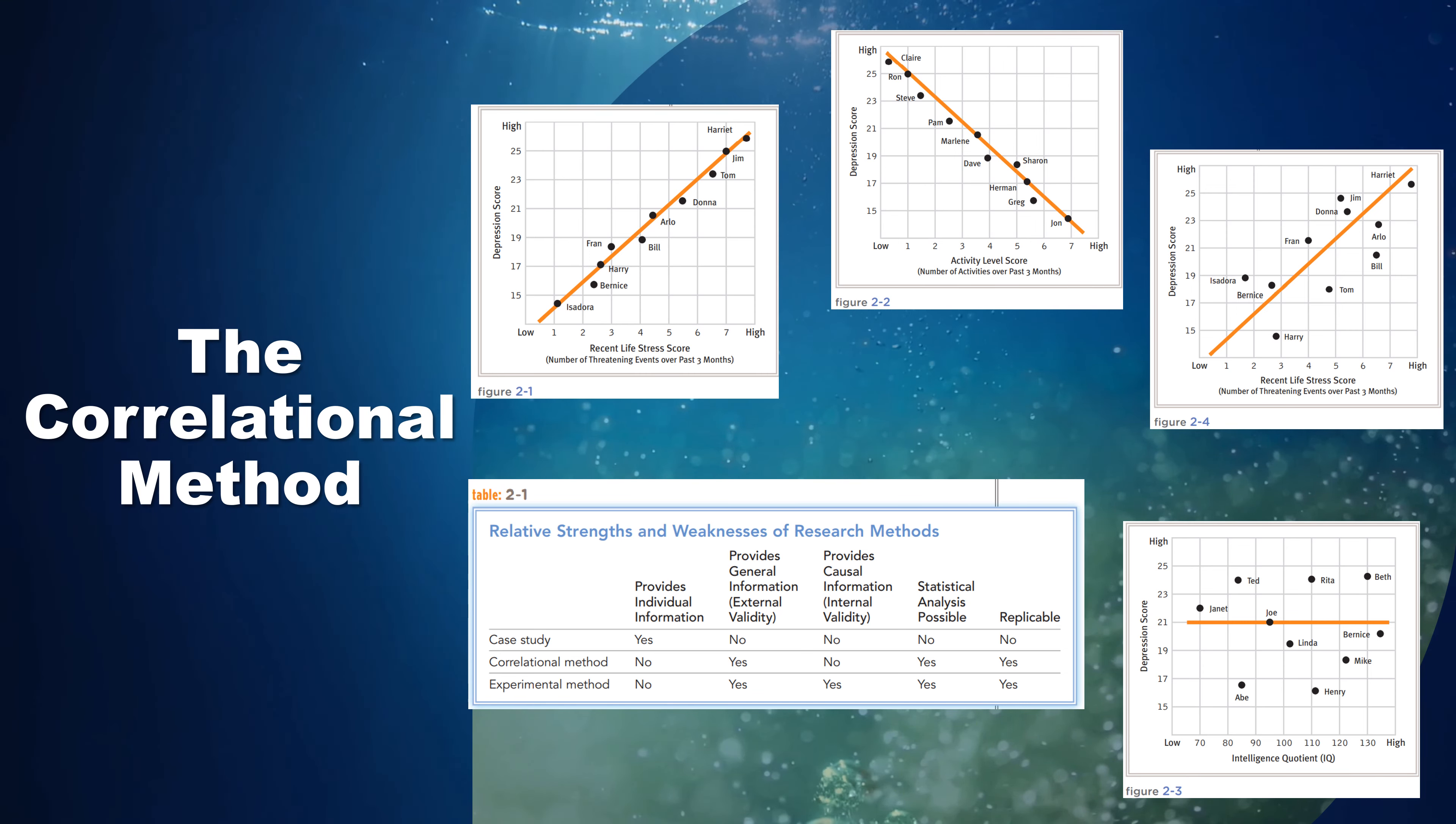But what if the graph of the correlation between depression and life stress looked more like Figure 2-4? In this figure, the data points are loosely scattered around the line of best fit rather than hugging it closely. In this case, researchers could not predict with as much accuracy an individual's score on one variable from his or her score on the other variable. The correlation in Figure 2-1 is stronger, or greater in magnitude, than that in Figure 2-4.